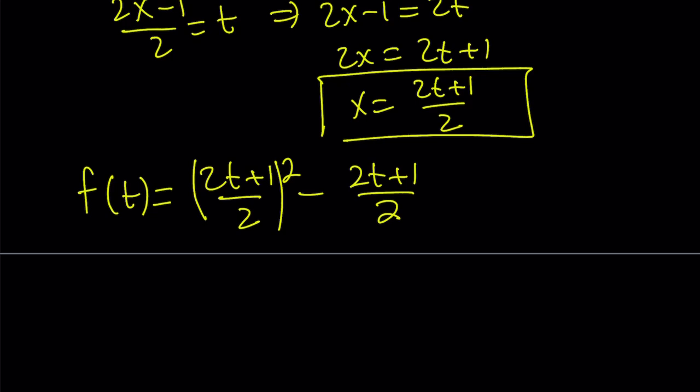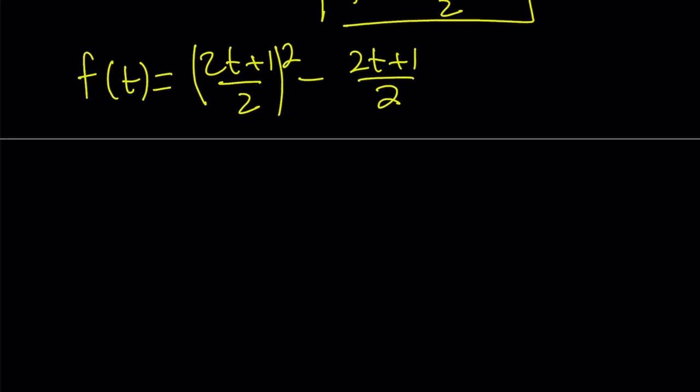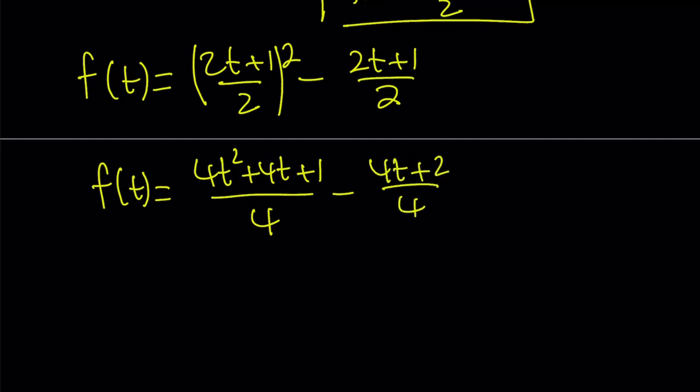Let's go ahead and simplify this in terms of t. And then we're going to turn it into x just by replacing t with x because the variables don't matter here. So if you go ahead and square, 4t squared plus 4t plus 1, that is divided by 4. And if you double the top here so that you can make a common denominator.